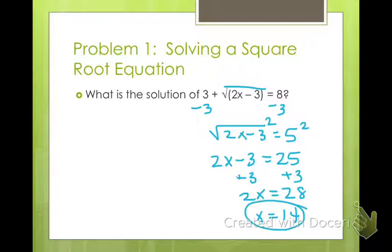Make sure with square roots that you always check your answer, because sometimes we'll have negative numbers and we can't do that. So 14 times 2 is 28; 28 minus 3 is 25; square root of 25 is 5; 3 plus 5 equals 8. The solution checks, so we're good.